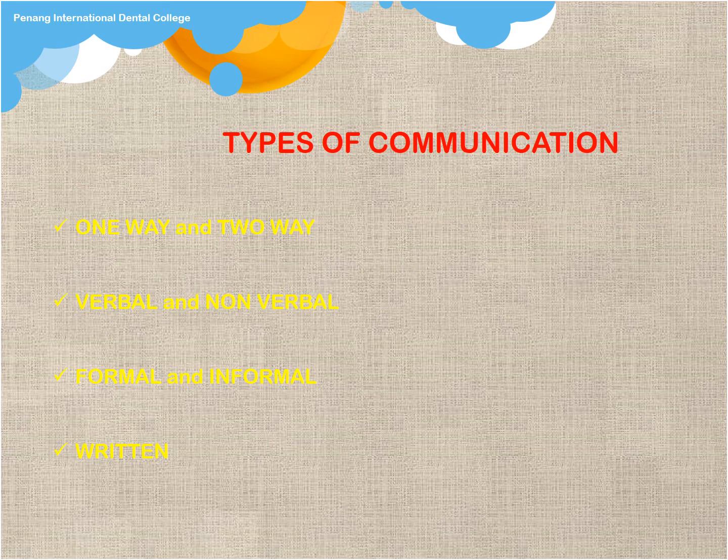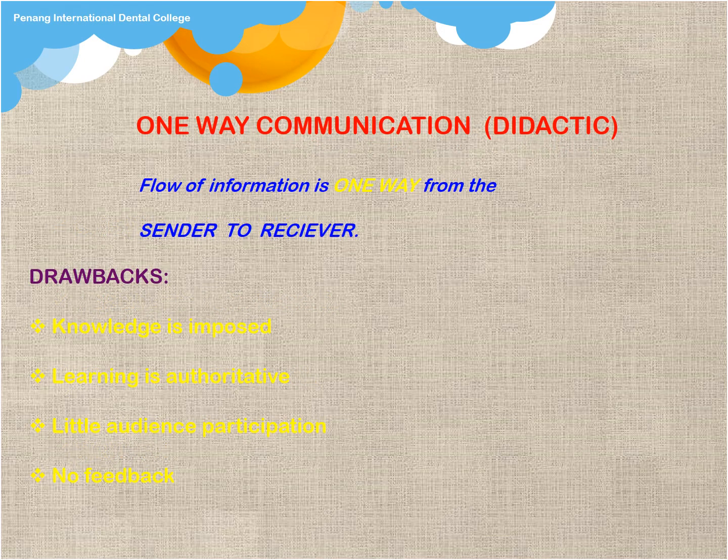Types of communication: basically there are four types — one-way and two-way, verbal and non-verbal, formal and informal, and written. One-way communication is didactic: the flow of information is one way from the sender to the receiver. The drawbacks are that knowledge is imposed, learning is authoritative, there is little audience participation, and no feedback.